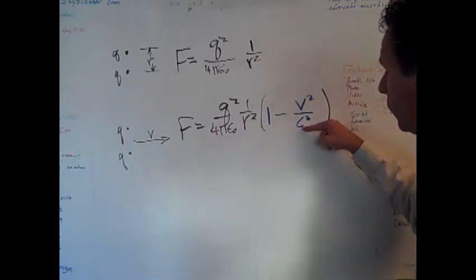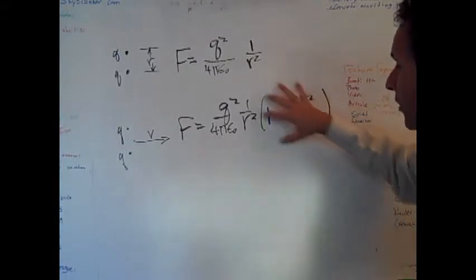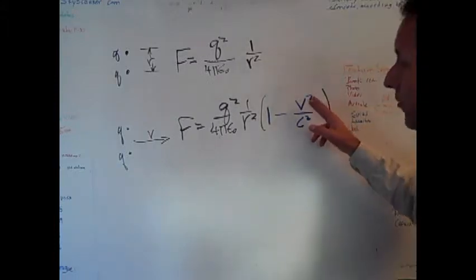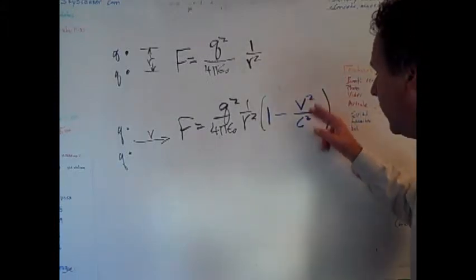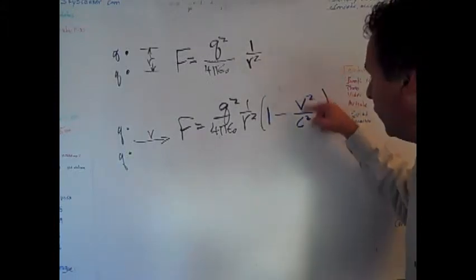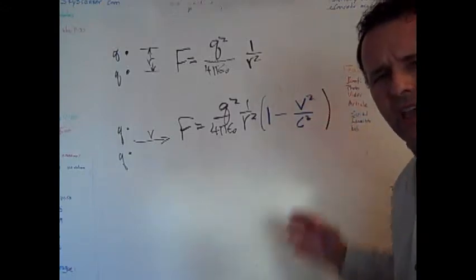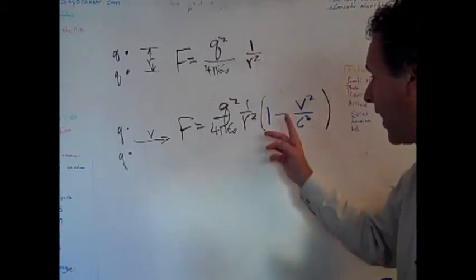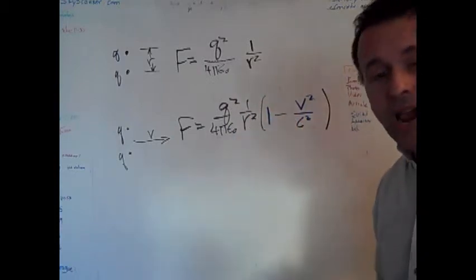Right? When V is equal to C, this piece is one, this thing is zero, the force goes to zero. And it gets weirder. If the speed of the two charges gets bigger than the speed of light, then this is larger than one. And then the force switches from being repulsive to being attractive because you get an extra minus sign.